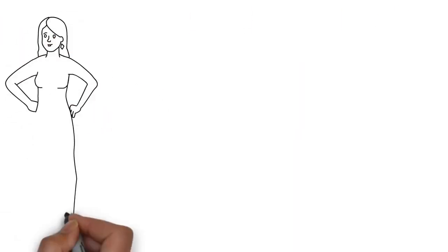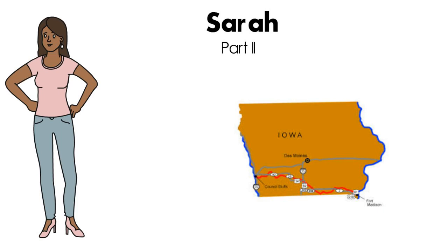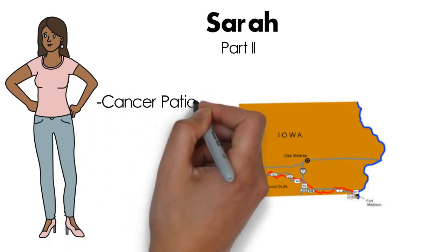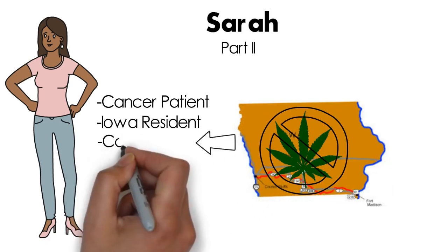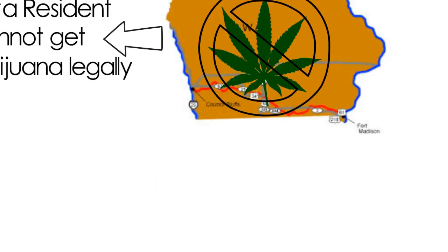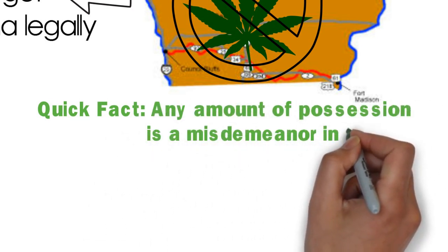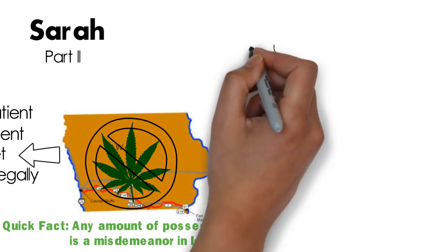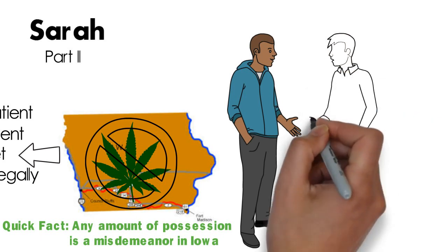Now let's say Sarah lives in a state where medical marijuana is not legal — Iowa, for example. She believes that the benefits would help her through the treatment process. Since it's illegal in Iowa and there are no locations to obtain marijuana, Sarah would have to get it illegally. She still wants it, although she would have to make the transaction in secret, and the price is pretty steep. If her friends and family found out, they may label her as deviant. If police caught her, she would be arrested, and society would definitely label her as a deviant then.